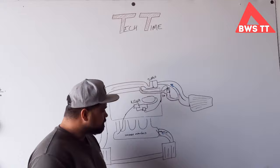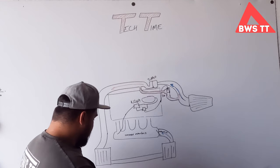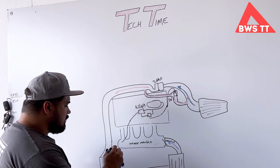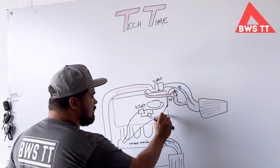If you were to bypass this system, which is the N249 delete, essentially you're running a fresh line from the intake manifold, missing out all of that straight onto the top of the diverter valve.